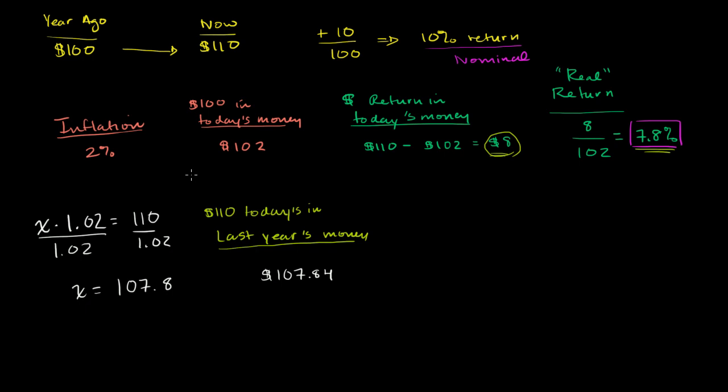So what is our dollar return in last year's money? Well, we ended up with $107.84 in last year's money, and we had originally invested in last year's money $100. So our dollar return is $7.84. Or if you want to calculate the real return,